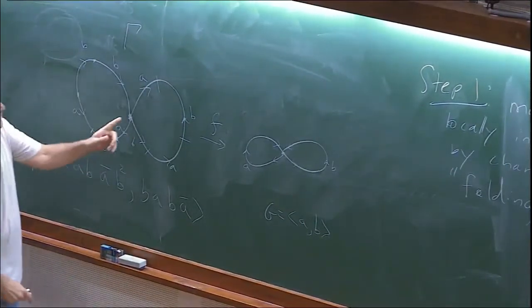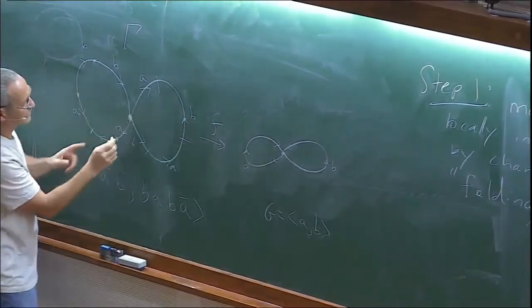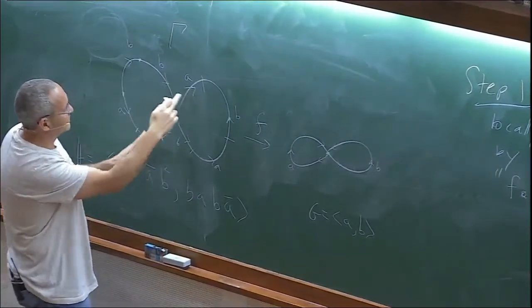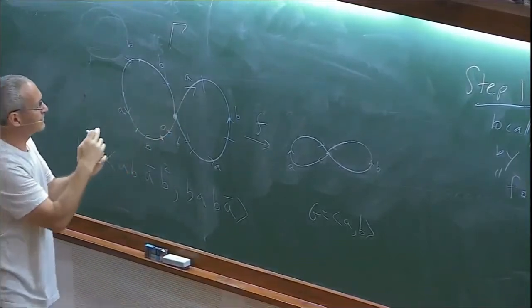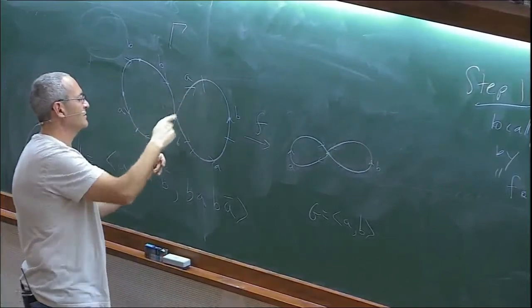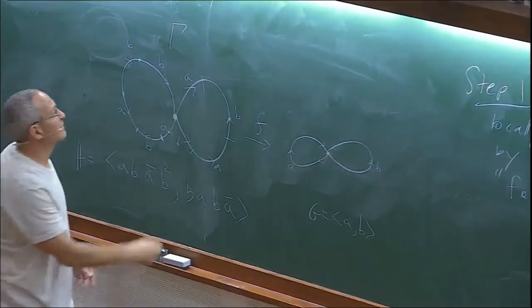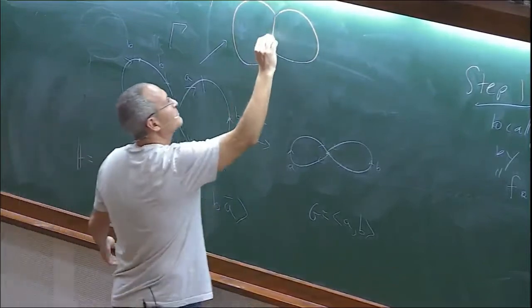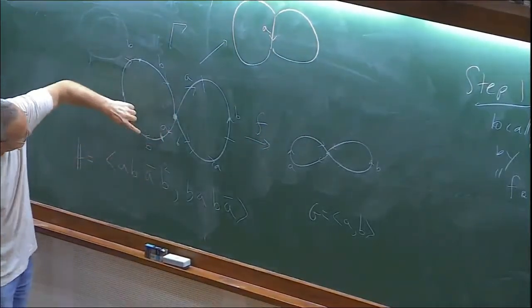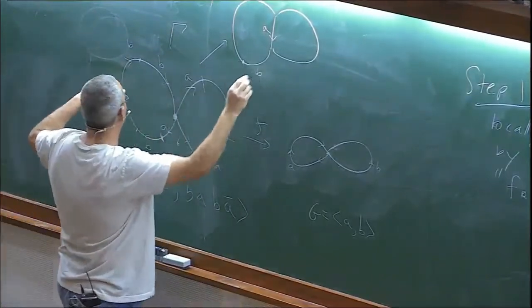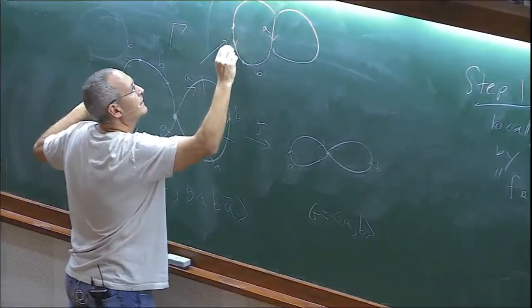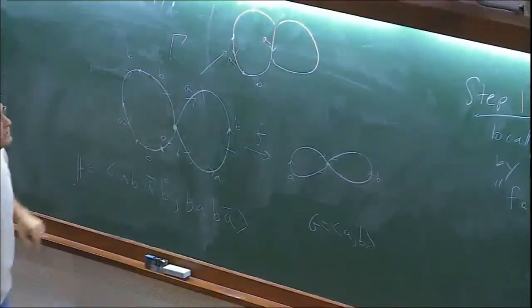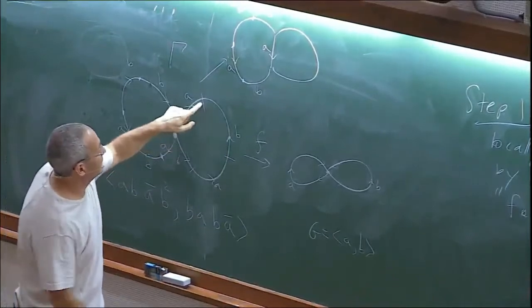That's the basic trick. Sometimes in math, the most productive thing is to find the most general setting where the same trick works. A special cube complex is exactly supposed to be the setting where this works. The moral definition: it's a non-positively curved cube complex where canonical completion and retraction work. Formally, a special cube complex is a non-positively curved cube complex that admits a local isometric embedding into a Salvetti complex.